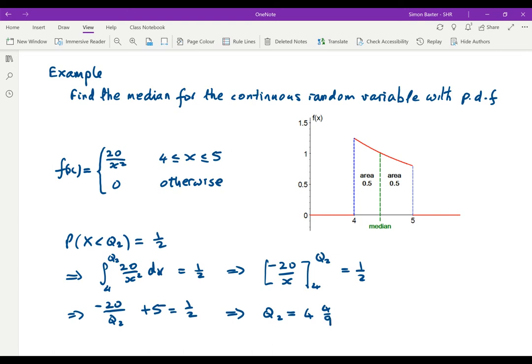Does that look sensible? Well, the probability density function is coming down. I would certainly expect the median not to be on the right of 4.5 or to be 4.5, and it must be a little bit below 4.5, which it is.